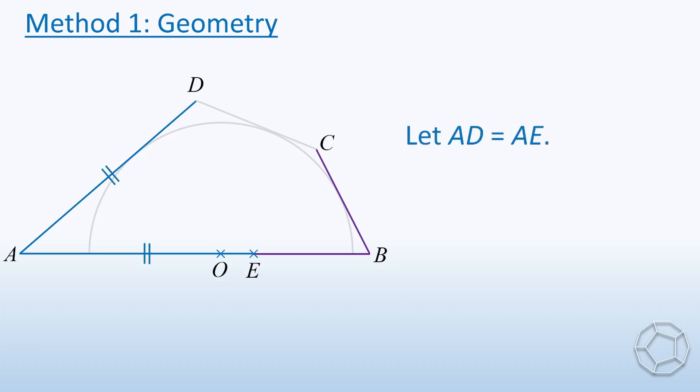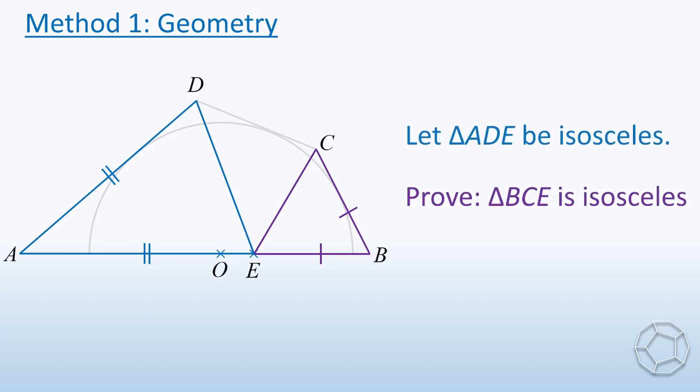So we let E be a point on AB first, such that AD equals AE. Then our goal is to prove that BC equals BE. Let's construct the sides ED and EC. What we are doing here is using the blue isosceles triangle to prove that the purple triangle is also isosceles. To do this, we have to make use of angles.